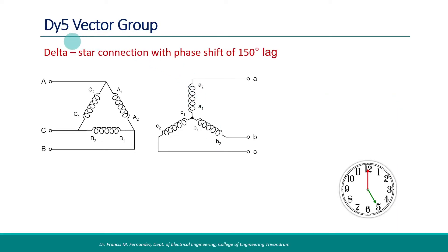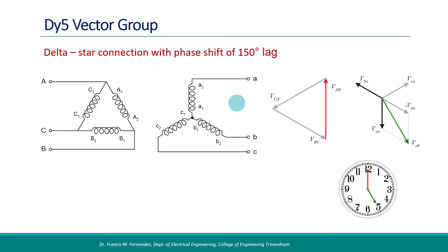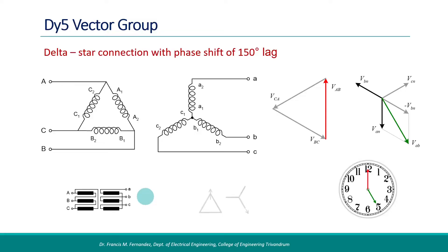In the DY5 vector group, the primary is delta connected and the secondary is star connected. Note that the polarity of the secondary side windings is changed here — the positions of A1 and A2 are interchanged. Therefore, in the phasor diagram, the voltage induced in winding A of the secondary will be 180 degrees displaced from the primary side line voltage. Similarly, the VB phasor is also displaced by 180 degrees. The line voltage VAB in the secondary is obtained by VA minus VB. The secondary line voltage is lagging by 150 degrees from the corresponding primary voltage — the 5 o'clock position holds here as well. The simplified connection diagram and displacement diagram are shown.